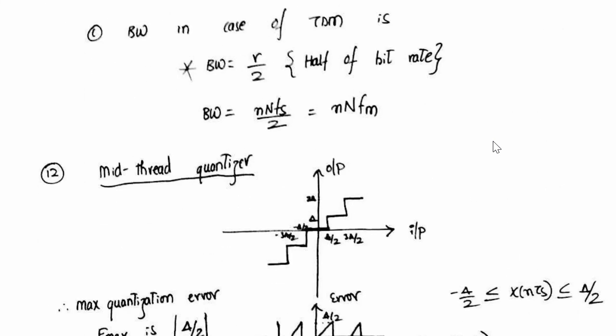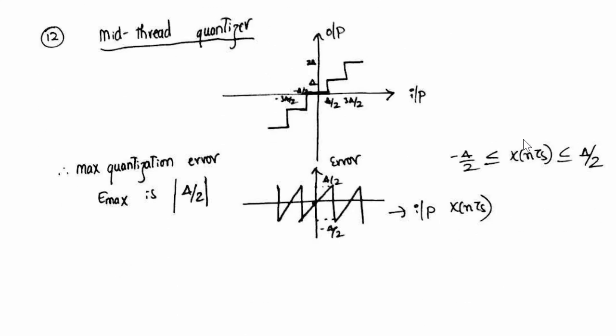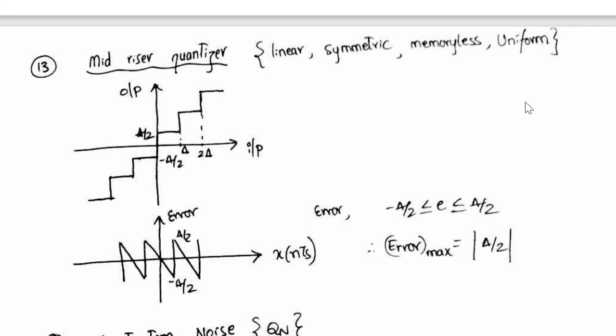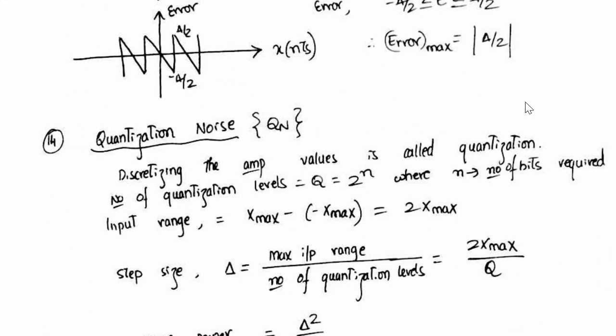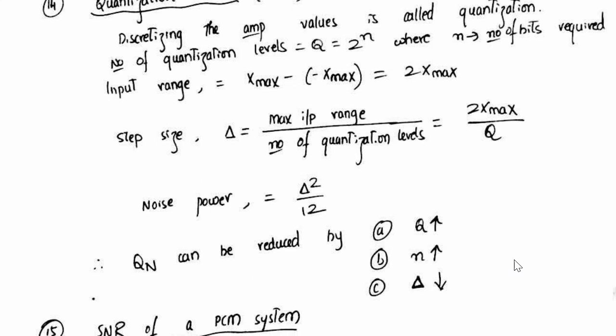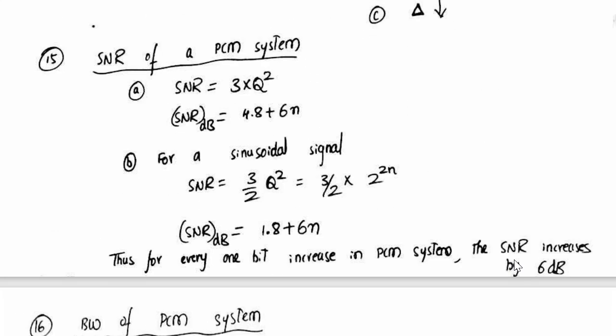Now comes the quantizer concept: one is mid-tread quantizer, another one is mid-rise quantizer. Related to quantization noise, there were many questions in previous year question papers. Even to derive this noise power, which is delta square by 12, this would be asked in interviews in some companies. So PCM system order.